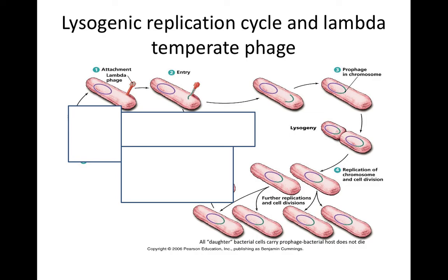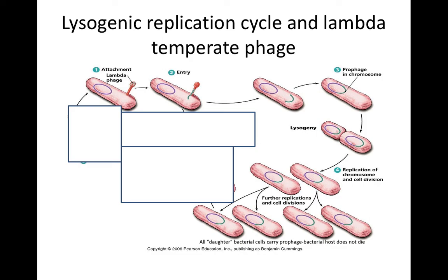We're going to stop this video here because the next cycle is the lysogenic replication cycle. It's a little bit complicated. We're going to see a special group of bacteriophage known as temperate bacteriophage that can carry out either the lysogenic replication cycle or the lytic replication. A specific example of a temperate phage is lambda phage of E. coli. Lambda phage can enter the lysogenic cycle, and then with specific triggers, it can switch back into the lytic cycle — this is referred to as induction. So let's stop this lytic replication video here, and we'll do another one on the lysogenic cycle.